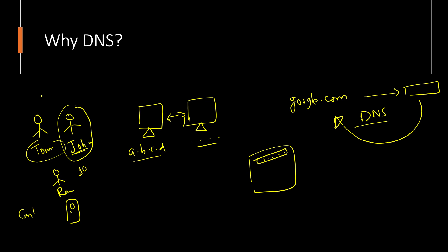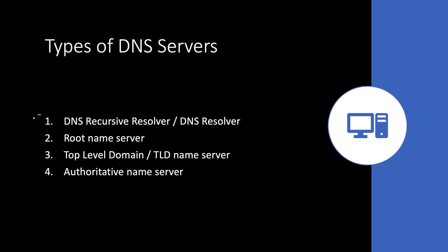Before that, let's understand the different types of DNS servers — there are multiple types. There are four types: first is called DNS Recursive Resolvers. There is a hierarchy in this system, which we will see in a minute. Next is Root Name Server, then we have Top Level Domain or TLD Name Server, and finally we have Authoritative Name Server.